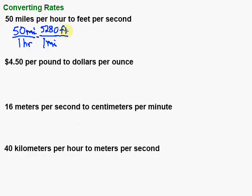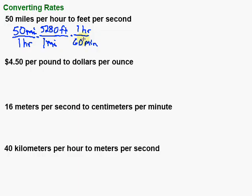Now if I look at the label, I have feet per hour. I want feet per second, though, so I've got the feet — I'm partway there. Now I need to take that hour and make it into seconds. I'm not 100% sure how many seconds are in an hour, so I'll work with things I know. The hour is on the bottom, so I put it on top: one hour equals 60 minutes. The hours cancel.